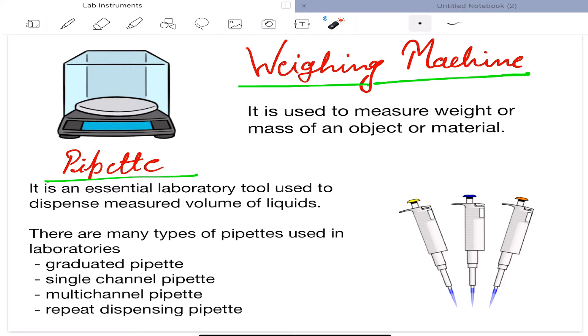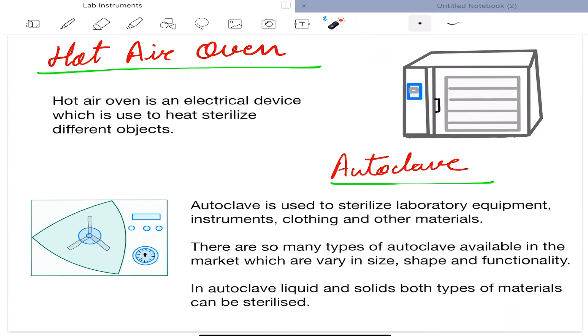It is used to measure weight or mass of an object or material. Next is pipette. It is an essential laboratory tool used to dispense measured volume of liquid. There are many types of pipettes used in laboratories: graduated pipette, single channel pipette, multi-channel pipette, and repeat dispensing pipette. Next is hot air oven.